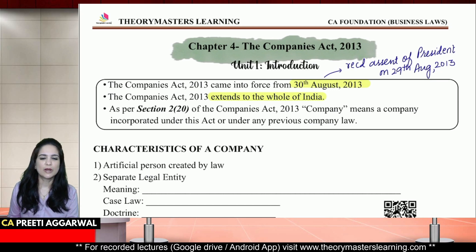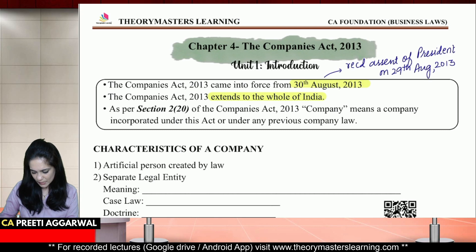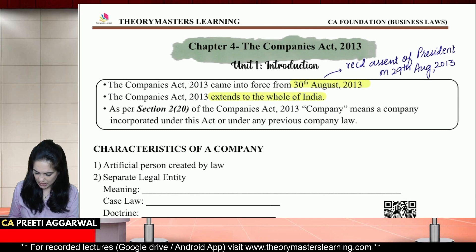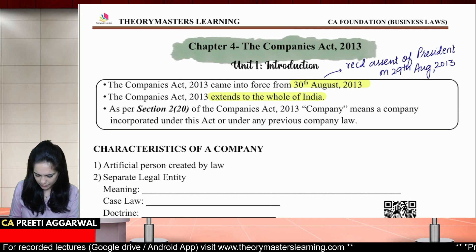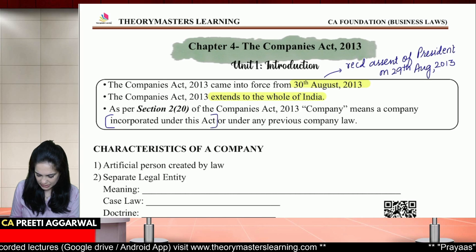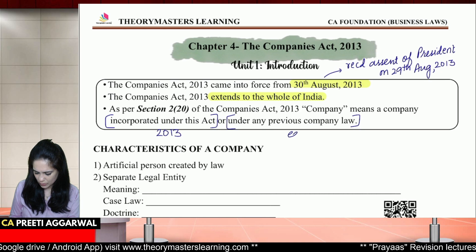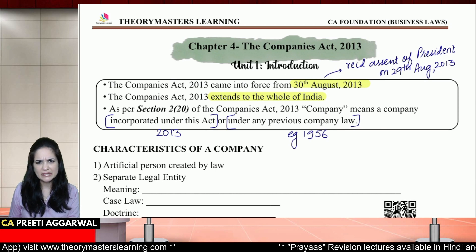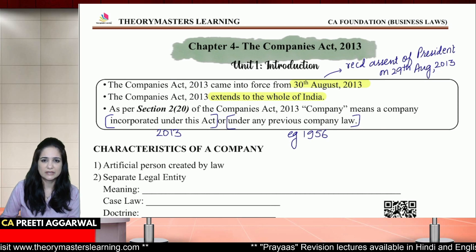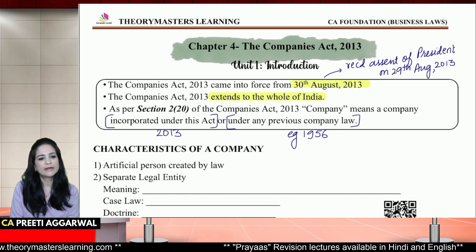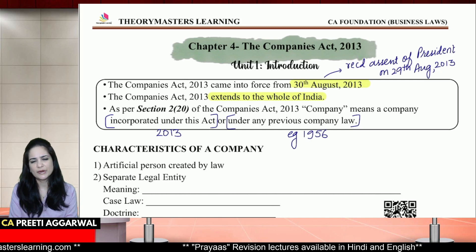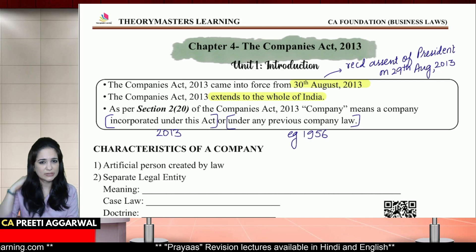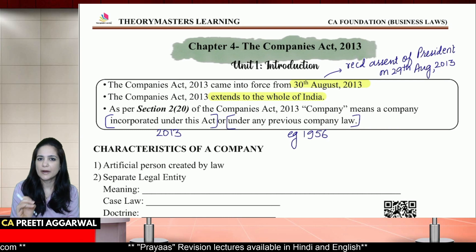As per Section 2, clause 20, 'company' means any company which is incorporated under this act — that is the 2013 act — or under any previous company law, let us say 1956. So whenever we use the word 'company', it not only means the company incorporated under the 2013 act, but it also includes companies which have been incorporated under the earlier acts. That is the definition of company.